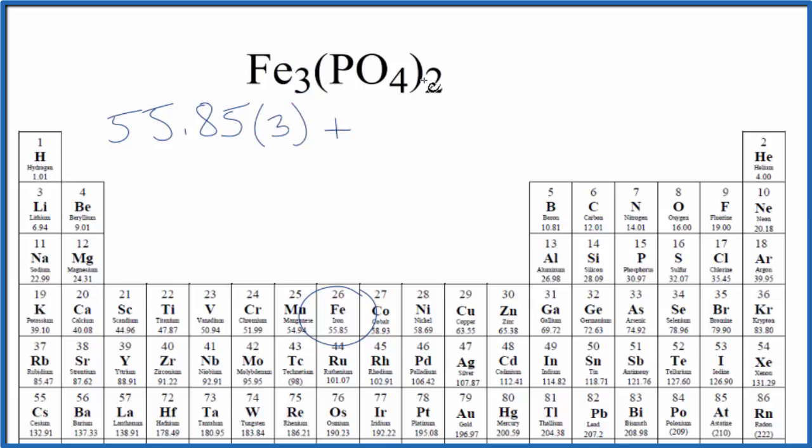Then we're going to add to that these two phosphate ions. So let's first figure out just one phosphate right here, then we'll multiply it by two.